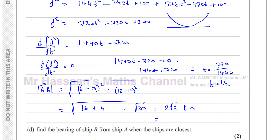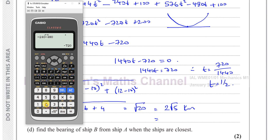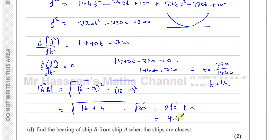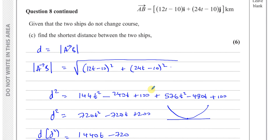2 times root 5 gives us 4.47 kilometers to three significant figures. That is the shortest distance between the two ships.